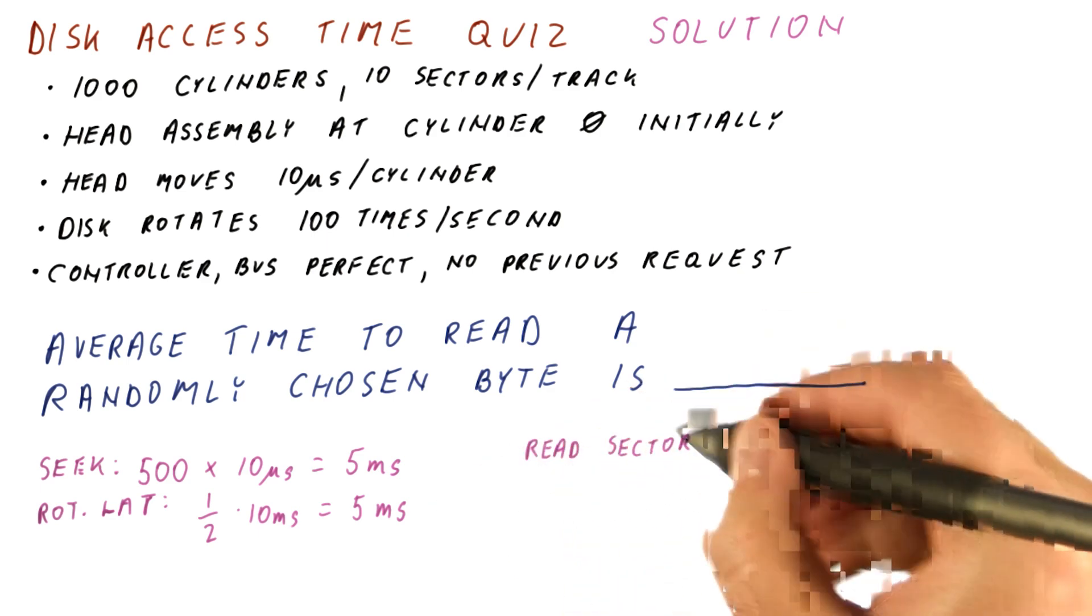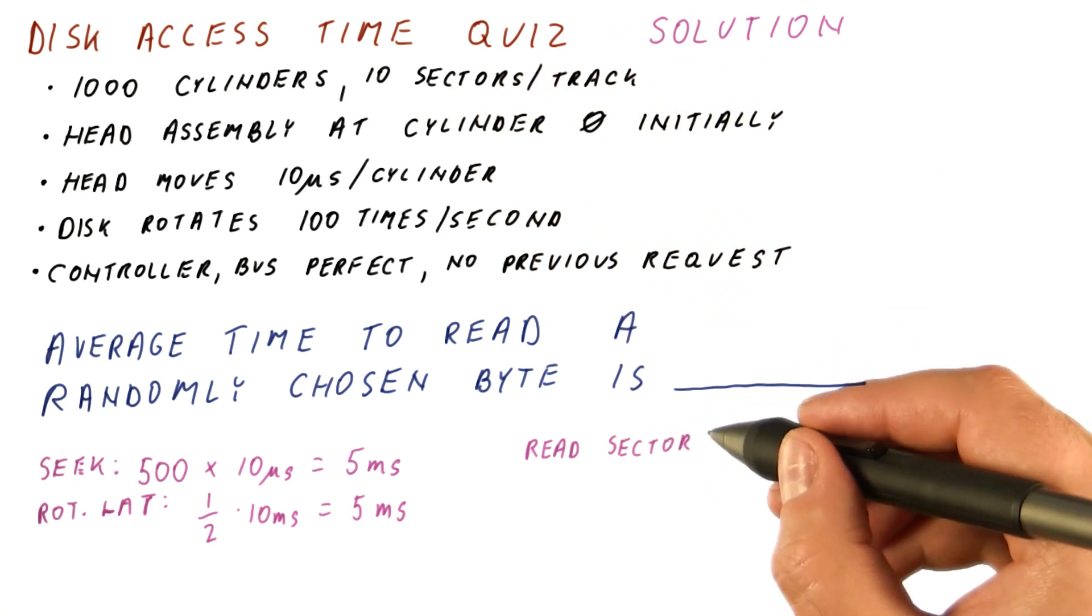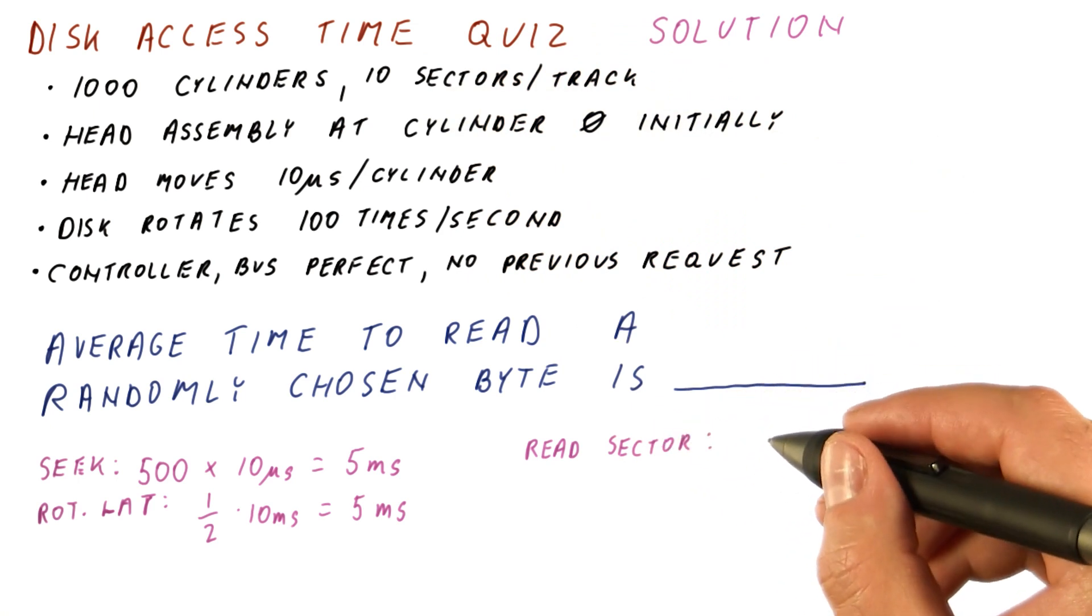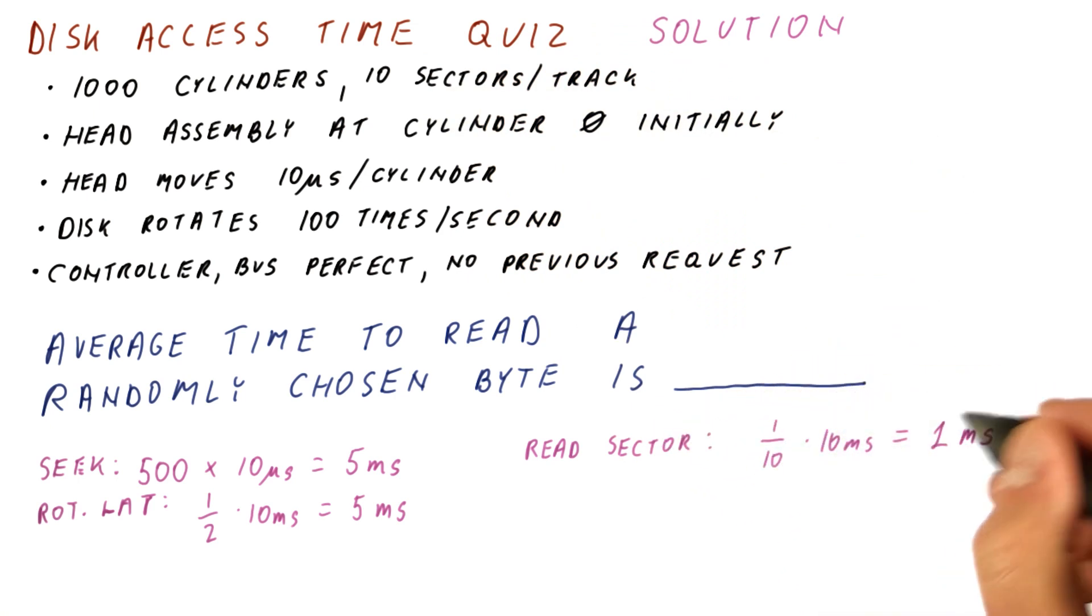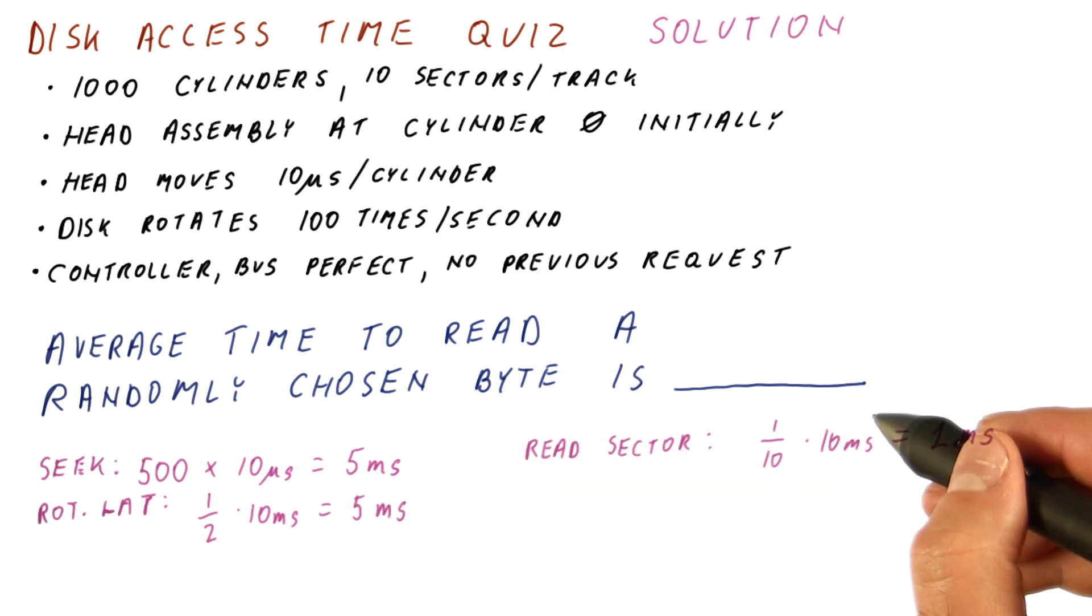Next, we need to read our sector. There are 10 sectors per track, so the read will take one tenth of a rotation, which will be 1 millisecond, because we already determined that a rotation will be 10 milliseconds.